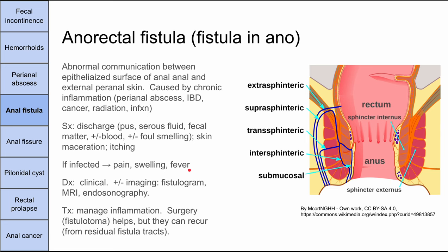Diagnosis of anorectal fistula is usually clinical. You can do imaging, a fistulogram, MRI, or endosonography, but usually the diagnosis can be made clinically. Treatment involves managing inflammation. Depending on the origin — for IBD, you might need better immunosuppressants; for infection, antibiotics. If these fistulas keep causing problems, you can do surgery called a fistulotomy, though that doesn't always work and recurring anorectal fistulas are possible despite corrective surgery.